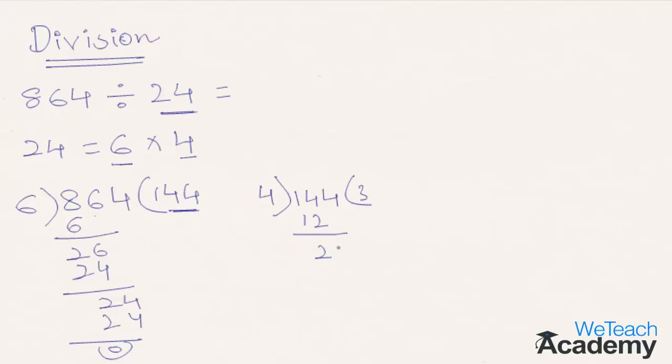4 times 3 is 12. 14 minus 12 is 2. Carry down 4, that is 24. 4 times 6 is 24, so the remainder is 0. The final result for this division is 36. So 864 divided by 24 is 36.